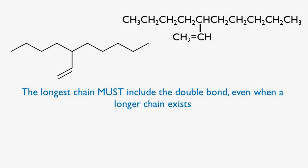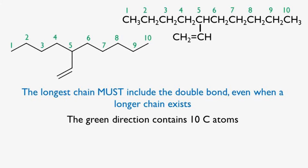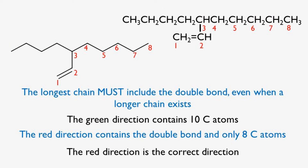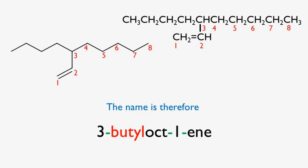Rule five. The longest chain must include the double bond even when a longer chain exists. For example, in this molecule, if we follow the green direction we have ten carbon atoms in a row. The red direction has eight carbon atoms including the double bond. Because the red direction includes the double bond, it is the correct direction for numbering, and therefore this molecule becomes 3-butyl-oct-1-ene.